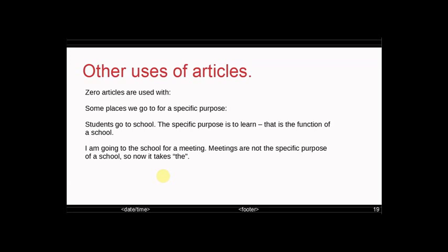Now here's a really difficult example. But in some places we go to for a specific purpose. So students go to school. The specific purpose of a school is that the students learn. That's the function of school. So this is the specific purpose. Students go to school. But now if I say I'm going to the school for a meeting. Well, meetings are not the specific purpose of school. So now it takes the.